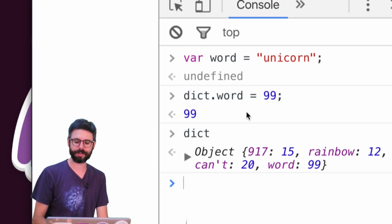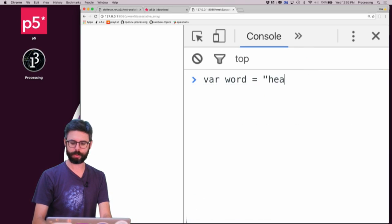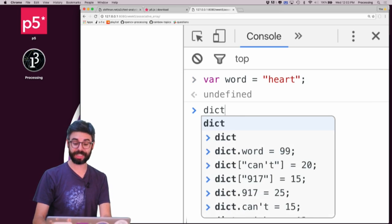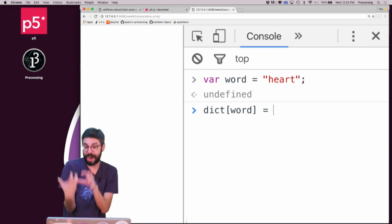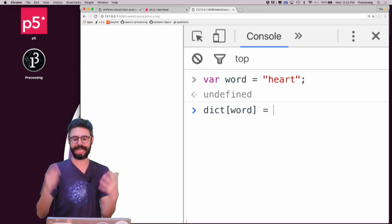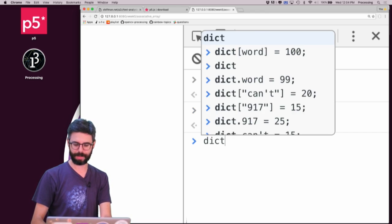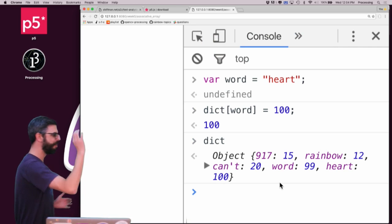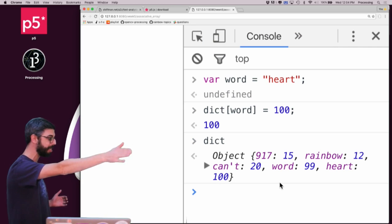I have to use that other syntax because what I want to do is say var word equals heart. Then I can say dictionary bracket word. Now it's going to evaluate the property of that variable as heart and be able to set that number. And I can say 100 and I can look at my dictionary again and we can see there are all the words and their associated counts. Heart is in there at 100.